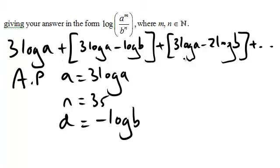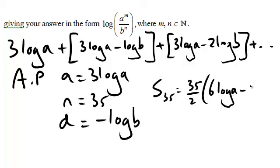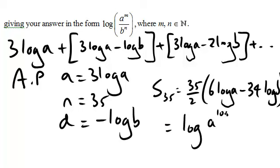Now I can put that into a standard formula for the sum of a sequence. S 35 is equal to 35 over 2 times 2a plus n minus 1 times d. Notice I put a minus sign in there because d is negative. And we can simplify that. And if you do simplify it, then you get log of a to the 105 over b to the 595.